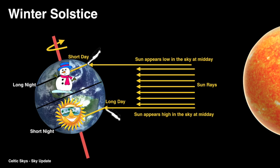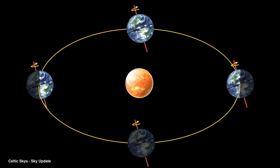As the Earth continues its orbit around the Sun in the first few weeks of December, the angle its axis makes away from the Sun continues to increase. Therefore, the days continue to get shorter and the nights longer in the Northern Hemisphere.